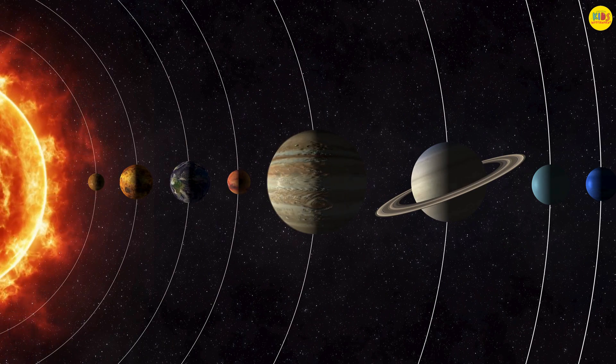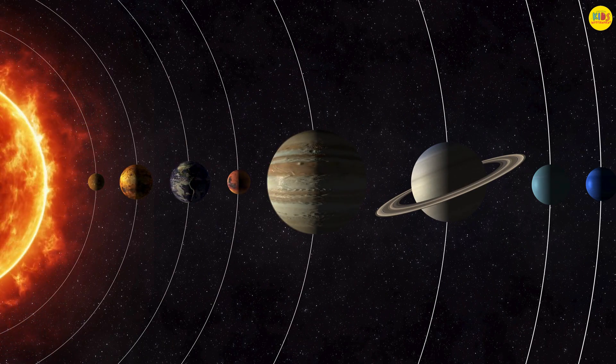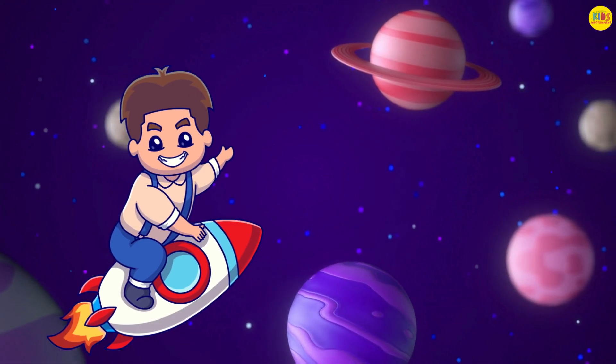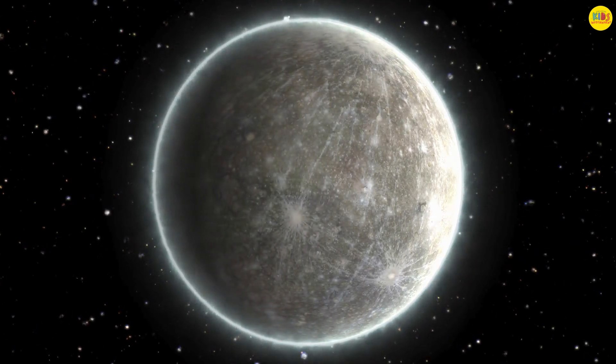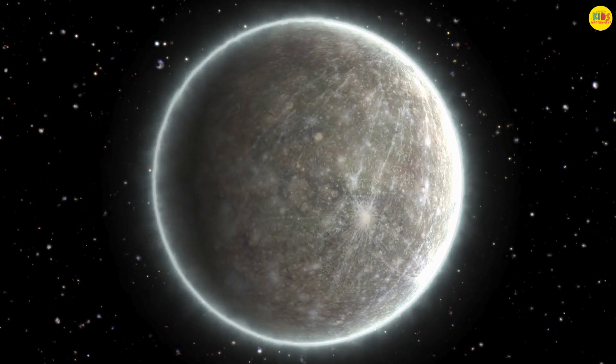Now, let's visit the planets. Ready? Here we go. Our first planet is Mercury. It's the closest planet to the sun and the smallest one in our solar system.